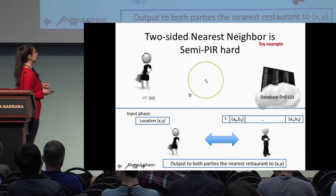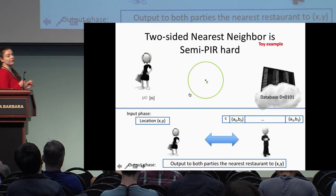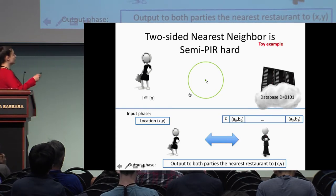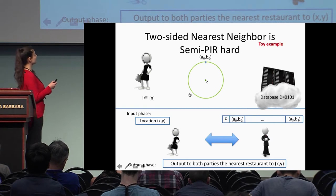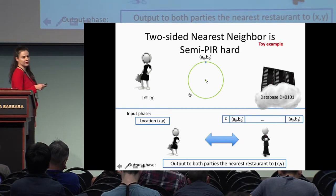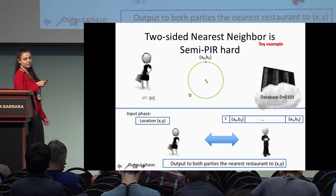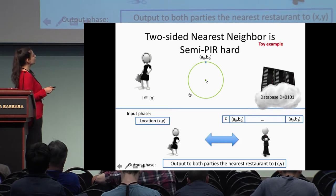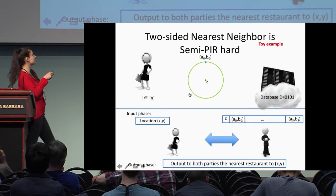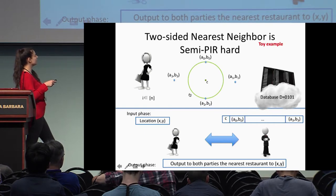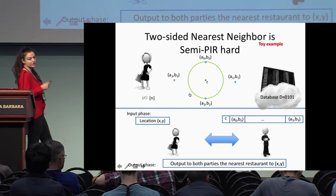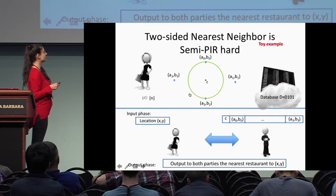In the semi-PIR notion, the server gets index i only if the element in the database is zero. We build a PIR protocol using only a single invocation of the nearest-neighbor problem. Suppose the database has four entries: 0, 1, 0, 1. If the entry is 0, we pick a location on a circle with center C; if the entry is 1, we pick a location outside the circle.